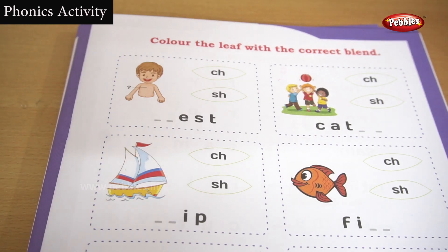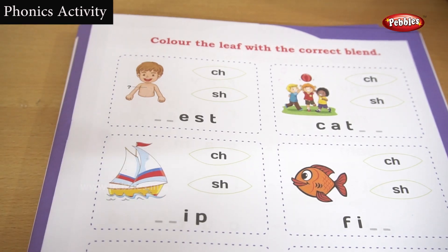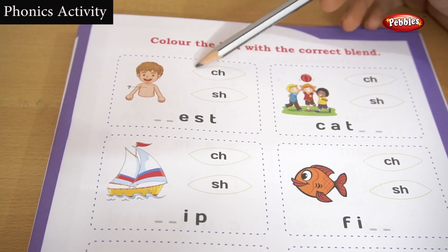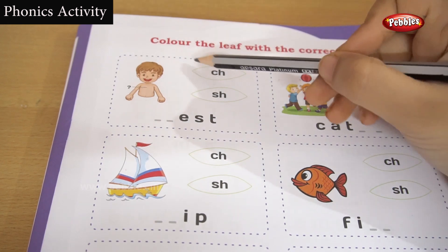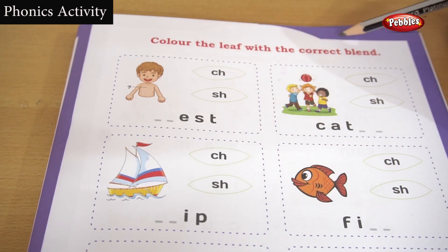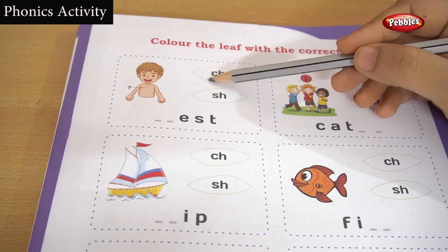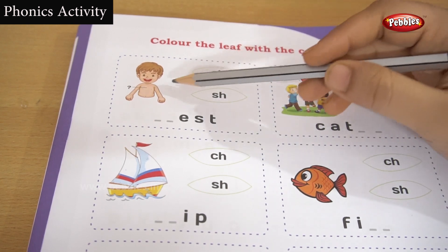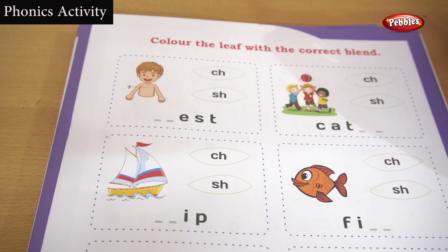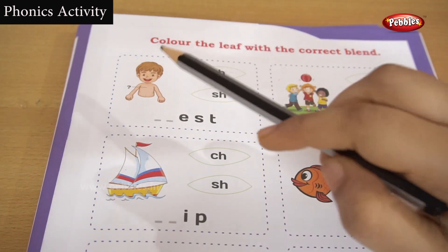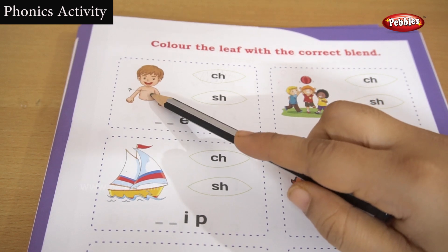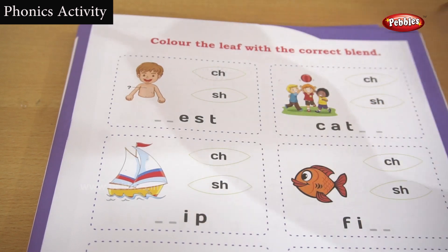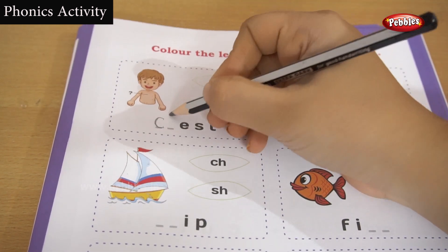Okay children, let's see the next exercise: color the leaf. They are saying to color each leaf with its corresponding correct blending word. Let's look at the first one - what is this? This is a chest, C-H.